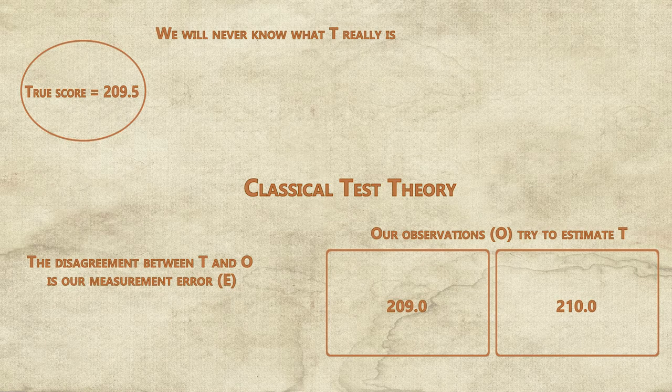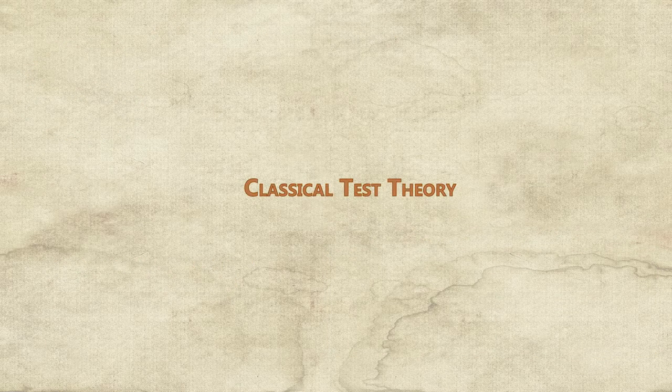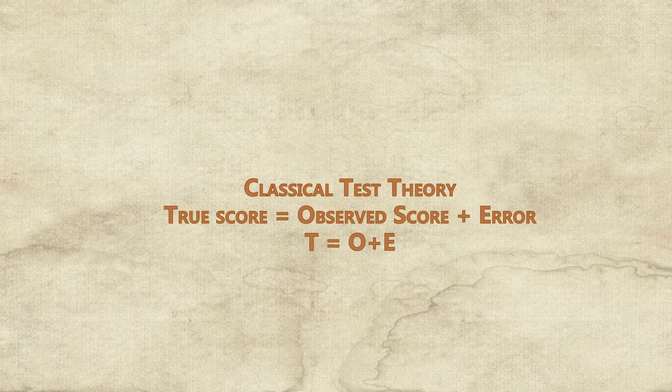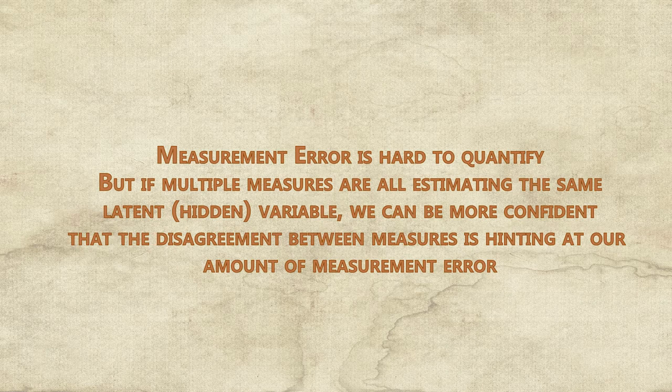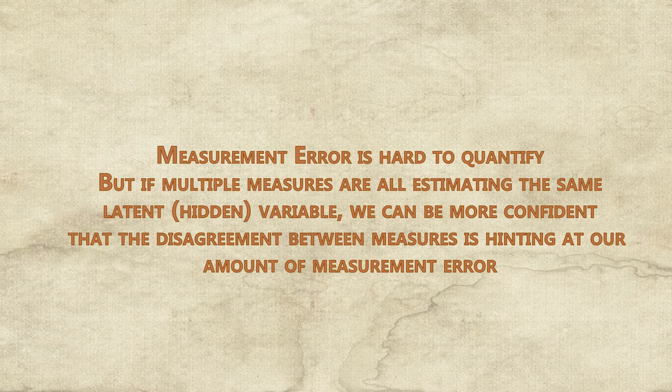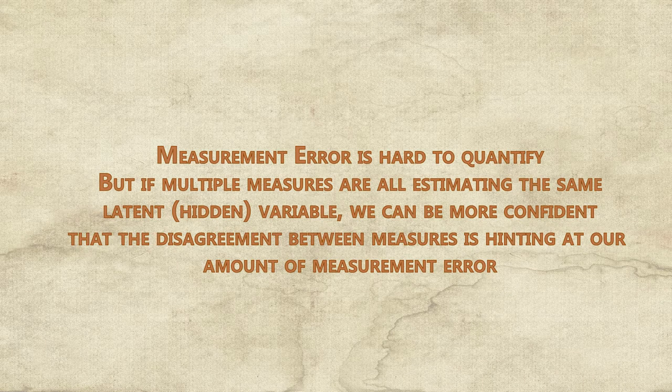So there will always be some amount of error, E, around that measurement. Thus, classical test theory says that an observed score equals the true score minus error: O = T - E. We never know exactly how much error we have, but with some measurements, we believe that we have more error than with other measurements.